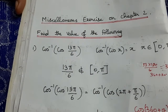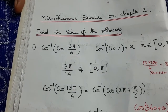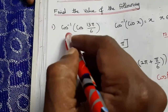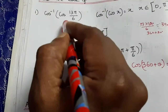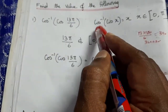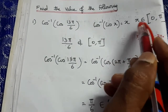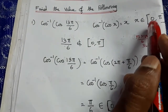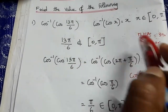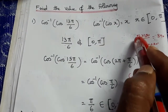Welcome to Math. This is Chapter 2, the miscellaneous exercise. Find the value of the following: Question 1 — cos inverse of cos(13π/6). We know that cos⁻¹(cos x) = x, where x belongs to the closed bracket [0, π]. Now, 13π/6 — check if this value belongs to [0, π].